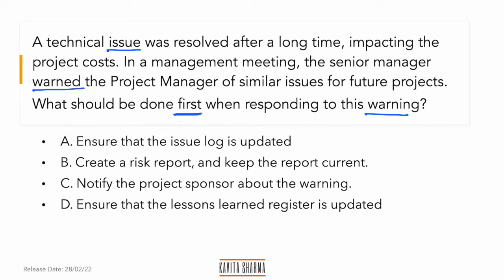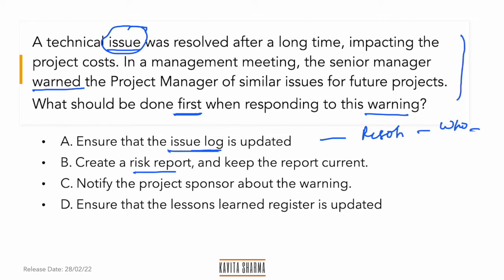Let's look at the answers. 'Ensure that the issue log is updated' — since there was an issue, I need to ensure the resolution, what happened, who did it, and what should be done to prevent it. This should definitely be done. 'Create a risk report' — have you seen the word 'risk'? You saw 'warning,' which may trigger the word 'risk,' but this is not a risk that happened; we're talking about an issue. So this is not the right answer.